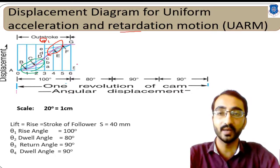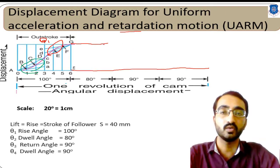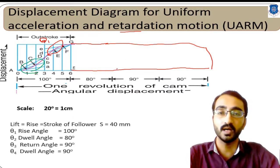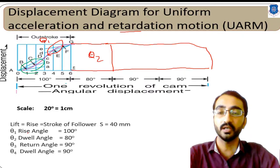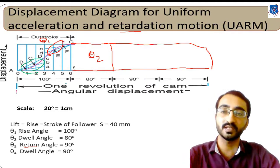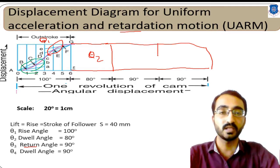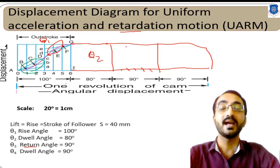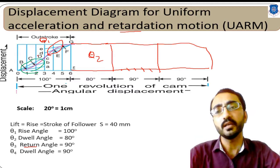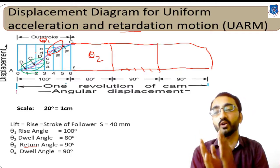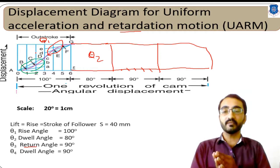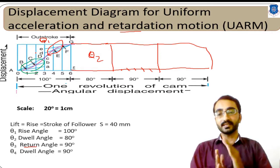For theta 2, the dwell portion of 12 degrees, simply extend the lines horizontally to complete the rectangle. This stroke represents theta 2. For the return stroke, follow the same procedure — divide the 45 mm line into 6 equal intervals and sketch inclined lines, similar to the rise stroke or outstroke.